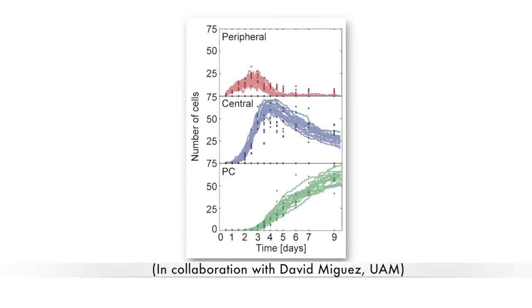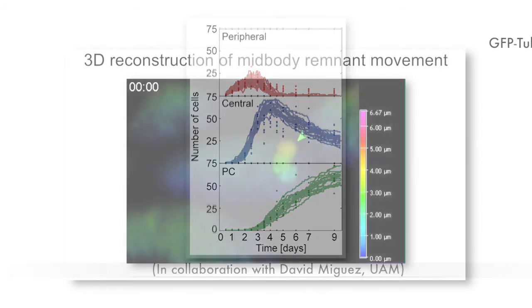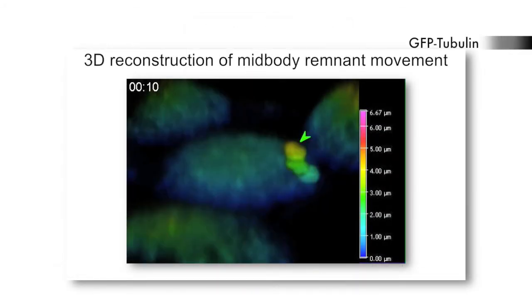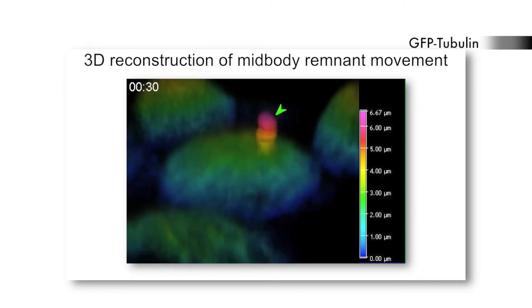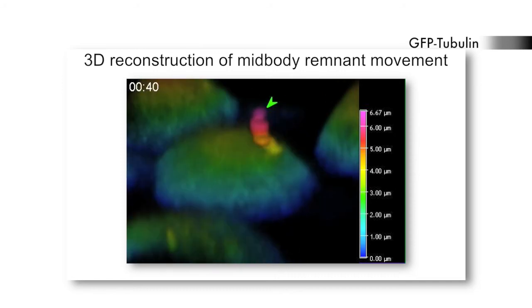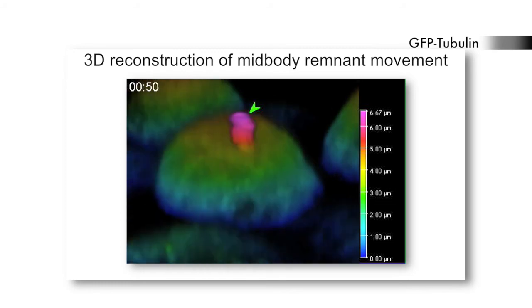Cell area governs the transition of the mid-body from the peripheral position to a central position and also for the formation of the primary cilium. What is probably most important is the change from tensile to compressive forces caused by cell-cell contacts in highly confluent MDCK cells, which drives conservation of the remnant, the transitions, and the beginning of ciliogenesis.